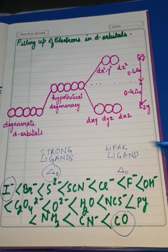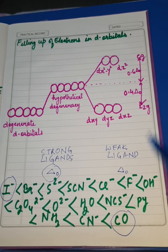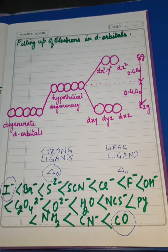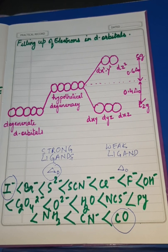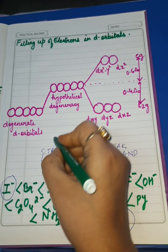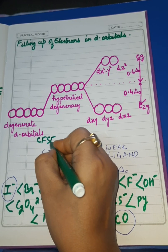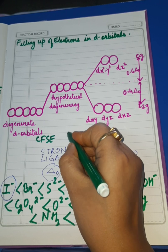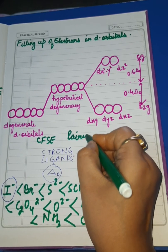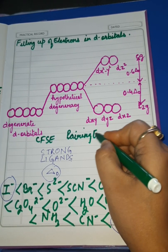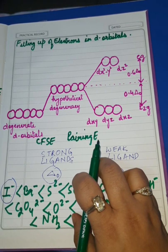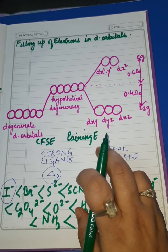Now I will teach you how electrons are filled up. The filling of electrons is governed by two energies: one is CFSE — that is crystal field splitting energy — and the second is pairing energy. This is the most important part of the crystal field theory.